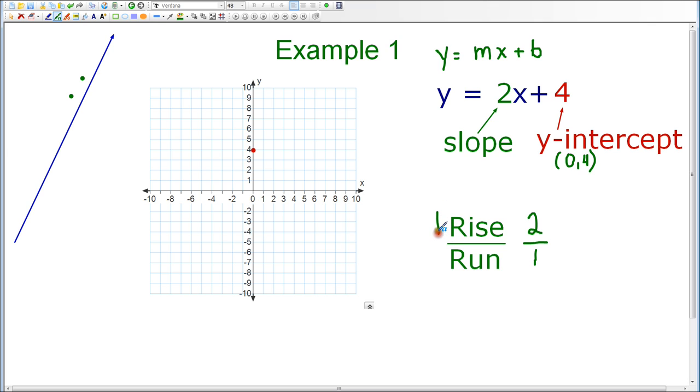The rise tells us how far to go up or down. Since 2 is positive, I'm going to rise up. The run tells us how far to go left or right. Since 1 is positive, I'm going to go to the right. So from our point 0, 4 on the y-axis, we're going to rise 2, so I'm going to count up 1, 2, and I'm going to run 1, so I'm going to go over to the right 1. That is where I'm going to plot my next point, which is at 1, 6.